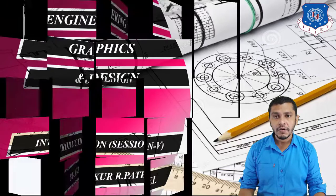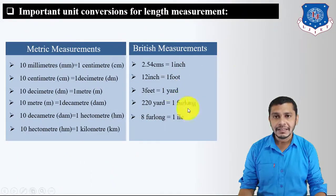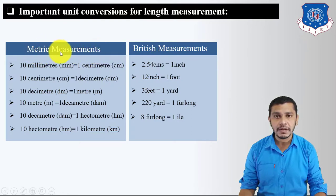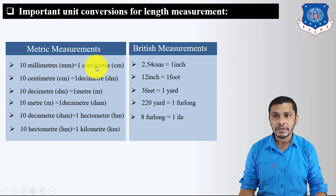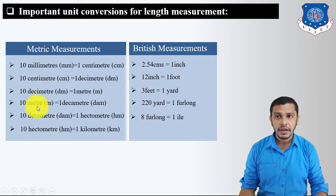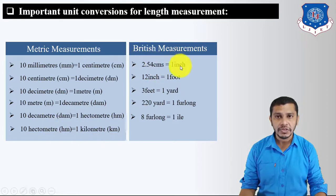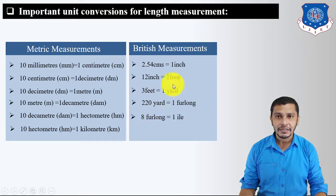Before moving on to the next example of plane scale, let us take an overview of unit measurements. There are two unit measurement systems: metric and imperial. In metric, 10 mm = 1 cm, 10 cm = 1 m, 10 m = 1 decameter, 10 decameters = 1 hectometer, 10 hectometers = 1 kilometer. In imperial, 2.54 cm = 1 inch, 12 inches = 1 foot, 3 feet = 1 yard, 220 yards = 1 furlong, and 8 furlongs = 1 mile.